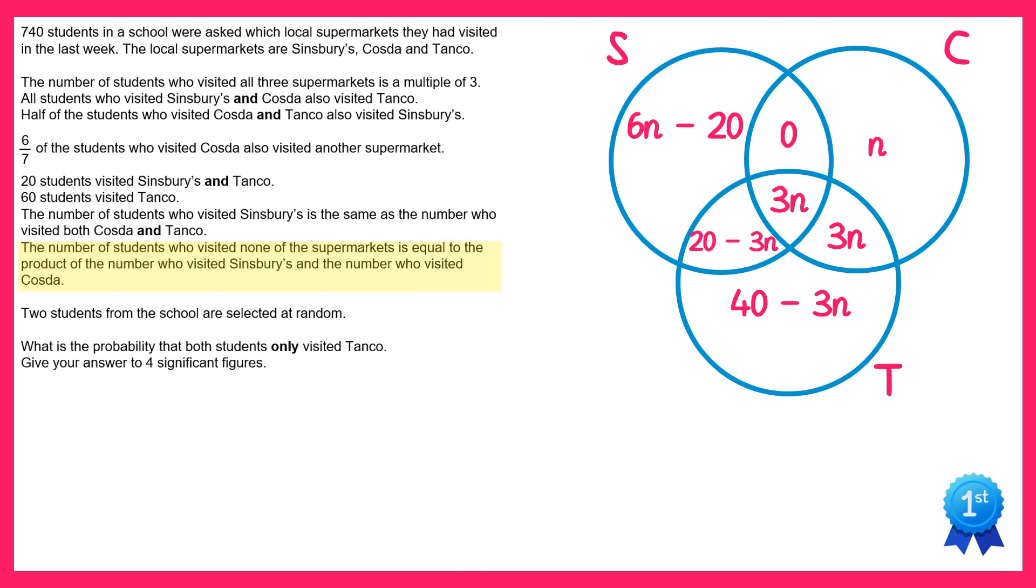Now we're told the number of students who visited none of the supermarkets is equal to the product of the number who visited Sinsbury's and the number who visited Cozda. If we add up those who visited Sinsbury's we get 6n, and if we add up those who visited Cozda we get 7n. So those that visited none of the supermarkets is 6n times 7n which is 42n squared. So we can add that to the outside of the Venn diagram.